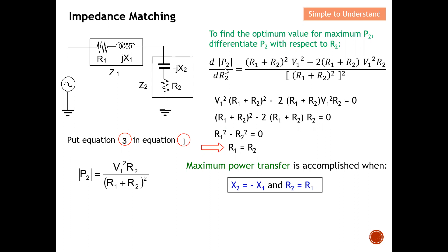Setting dP2/dR2 equal to zero, the denominator term goes to zero, leaving the numerator portion: R1 plus R2 squared minus 2 times (R1 plus R2) times R2 equals zero. Working through this, we conclude that R1 must equal R2. Therefore, for maximum power transfer, the resistive parts must be equal and the reactive parts must be complex conjugates — meaning Z1 equals R1 plus jX1 and Z2 equals R2 minus jX2 with R1 equal to R2.